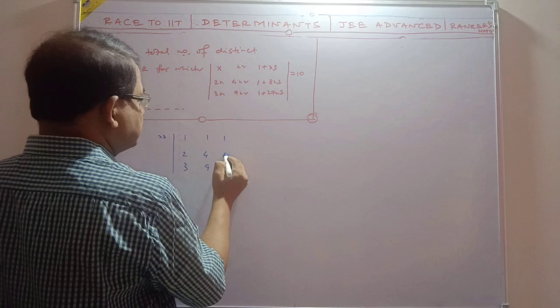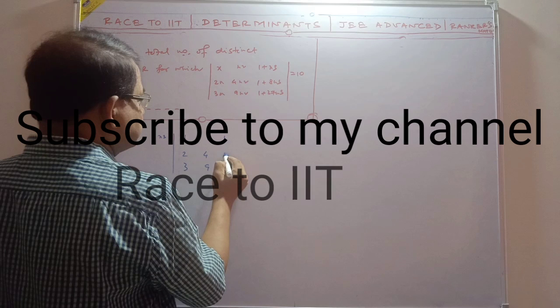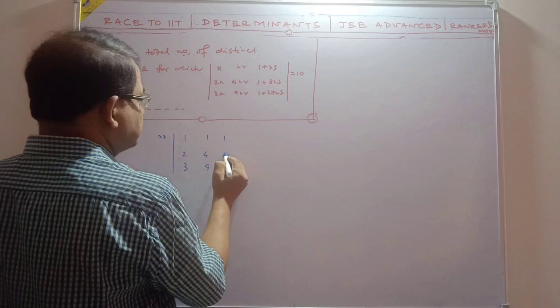Solving 6t squared plus t minus 5 equals 0: this factors to give t plus 1 equals 0 and t equals 5 by 6. Since t equals x cubed, we get x cubed equals minus 1, giving x equals minus 1, minus omega, minus omega squared, and x cubed equals 5 by 6, giving one real cube root. So the number of real solutions is 2.